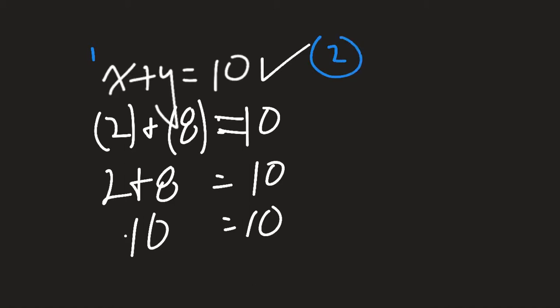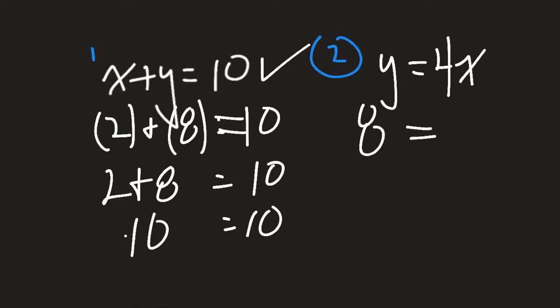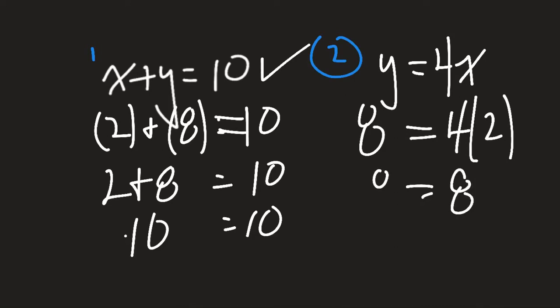We'll check it also for equation number 2. Equation number 2 was y equals 4x. The next thing I do is substitute in our values. We know that y equals 8, and 4 times 2 is 8. So 8 equals 8 — we know that it is also correct. Therefore, we verify that our solution is correct.